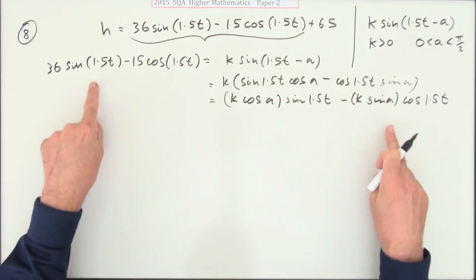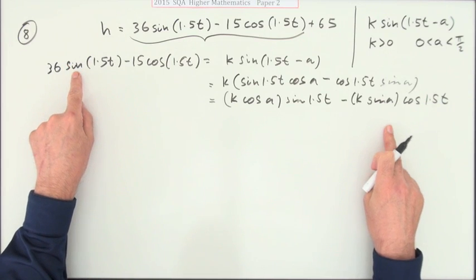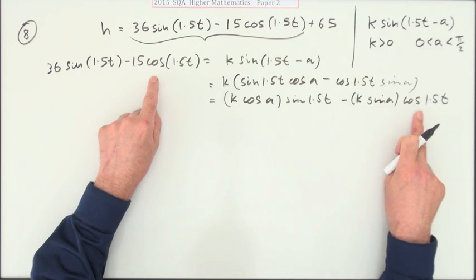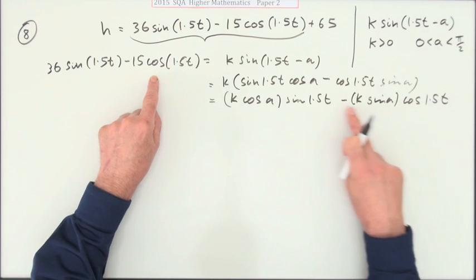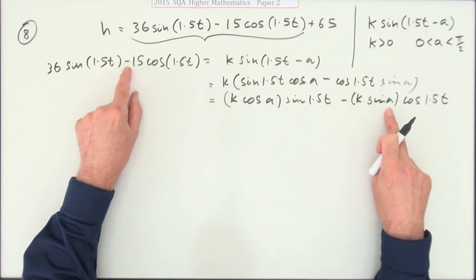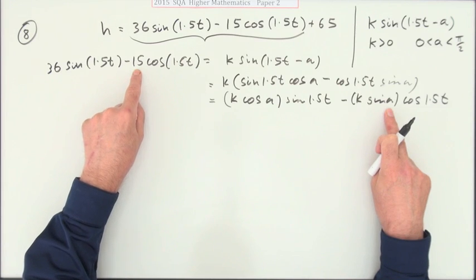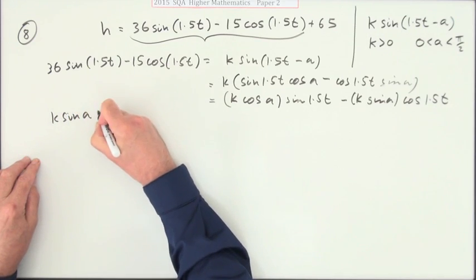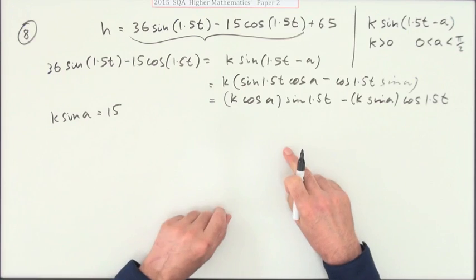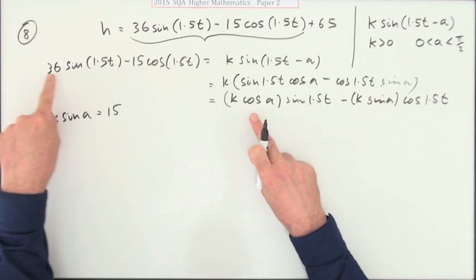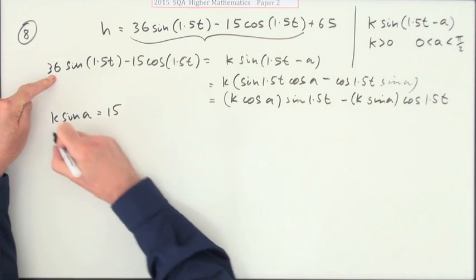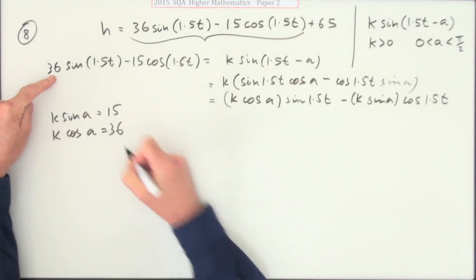Because now you're going to compare the two sides. The sine term here with the sine term here, the cos with the cos. But I'm going to do the cos first of all. So the coefficient of cos is negative this thing, which should be negative 15. The sines are fine. So k sine a equals 15. Then the sine terms, the coefficient of the sine term is 36. The coefficient of the sine term is k cos a. So k cos a is 36.